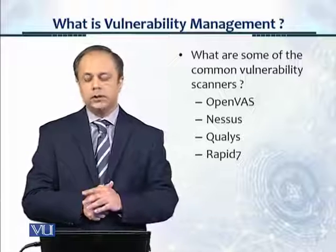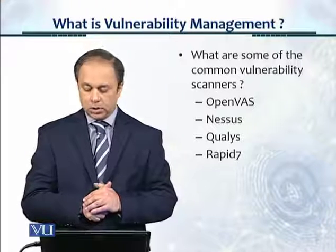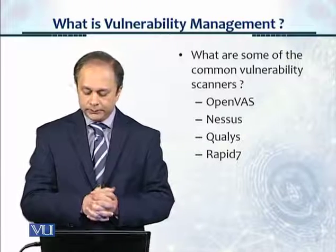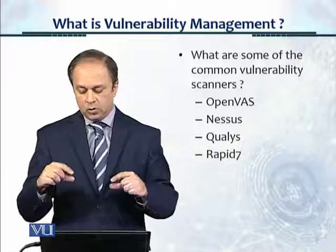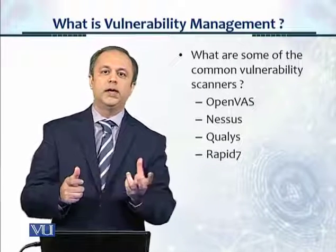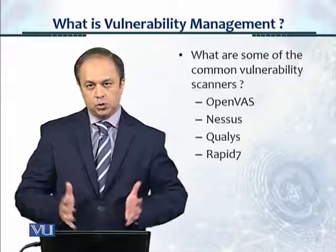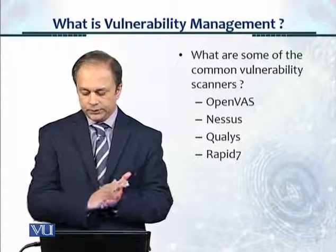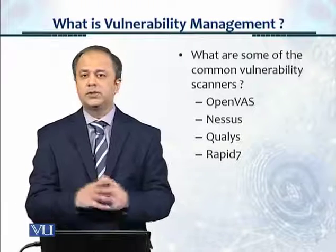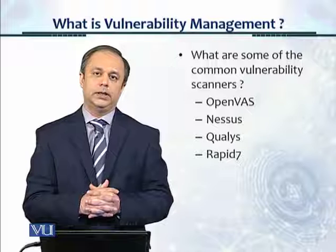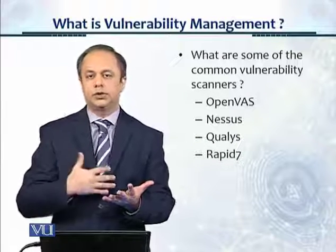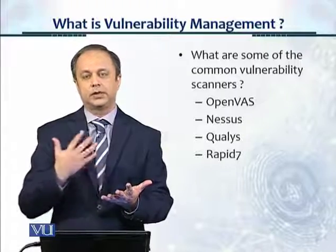What are the common vulnerability scanners? There is OpenVAS, which is an open source commonly used scanner. There is Nessus — in fact, when Nessus became commercial, OpenVAS became the open source version, and the source is the same, so Nessus is now the commercial version. Then you have Qualys, which is a cloud-based solution, and Rapid7, among many other scanners. If you look on the web, there are scanners available from major security vendors like McAfee, Symantec, Kaspersky, and others.